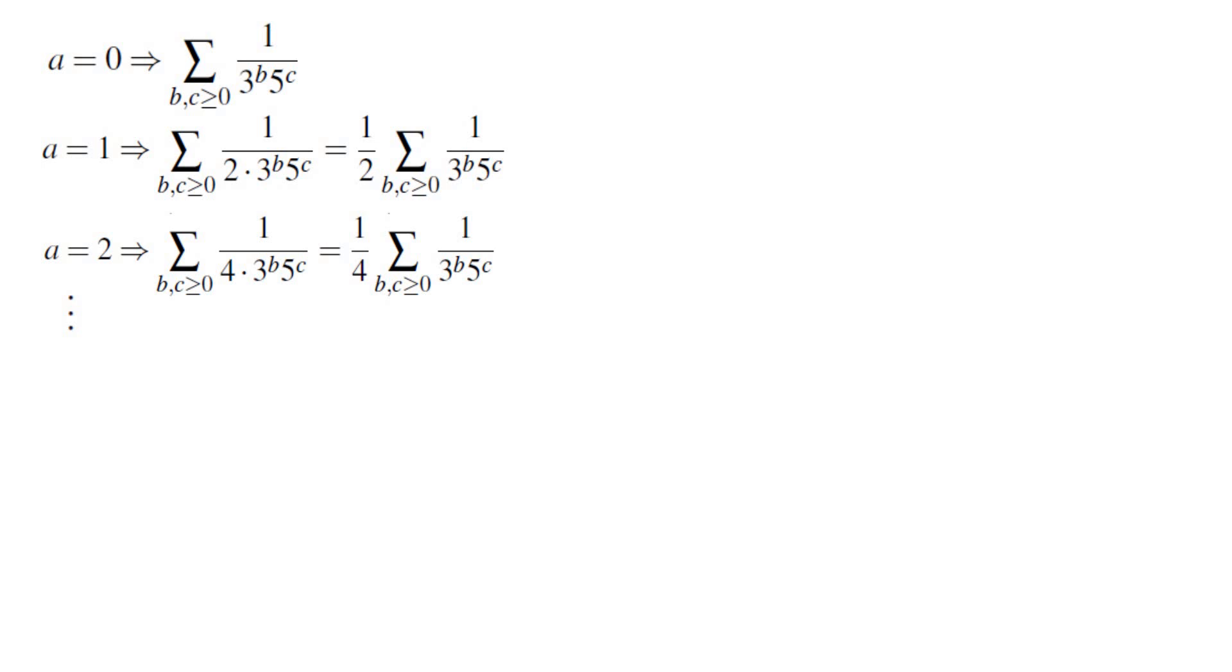That means we can factor from the entire sum a term sum of 1 over 3 to the B times 5 to the C and what is left is 1, 1 half, 1 fourth, 1 eighth and so on. Which means the given sum is equal to the product of these two sums.